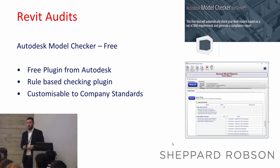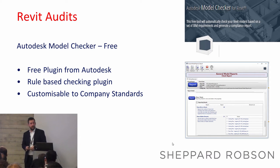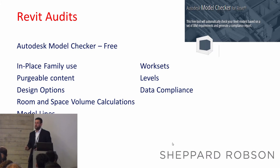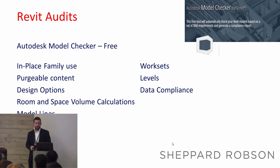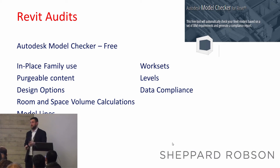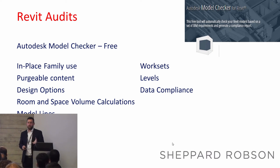There are plenty of tools available. From Autodesk, there's the free Model Checker — a rule-based model checking tool you can set up against your own internal company standards. You can check the number of in-place families, which is not easy to check otherwise. You can also check the number of design options being used — you may want to ensure those are cleaned out once finished — and the number of objects you can purge. The beauty of Model Checker is it brings everything into one place, saving you from routing around the model to pull all this information.